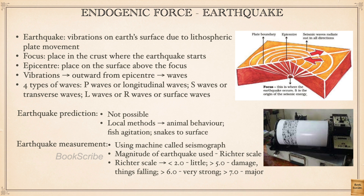To measure earthquake intensity, we use a machine called a seismograph, which records the various waves. The magnitude of the earthquake is measured using the Richter scale. If the measurement is less than 2.0, there is very little damage and hardly any tremor is felt. If it is 5.0 or more, there will be mild damage and things start falling. If more than 6.0, the magnitude is high and damage is greater. More than 7.0 is a major earthquake — the 2004 tsunami measured more than 7.0.